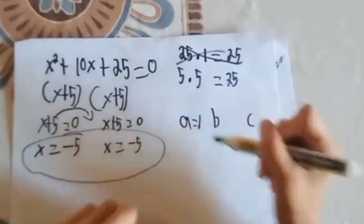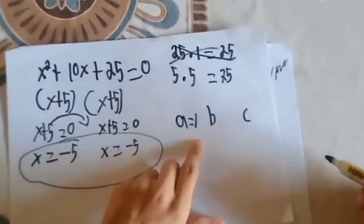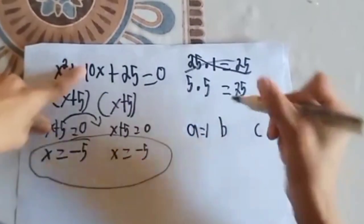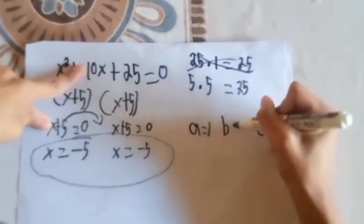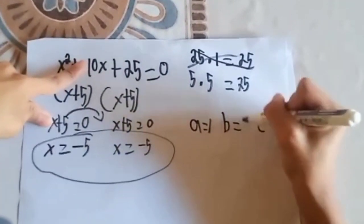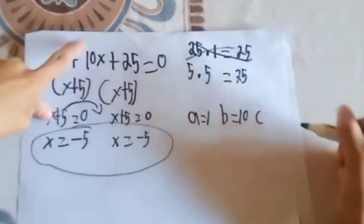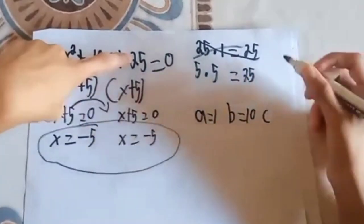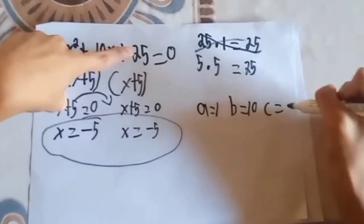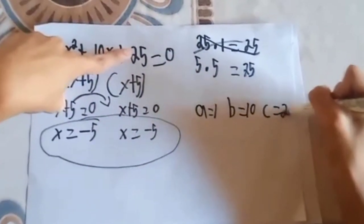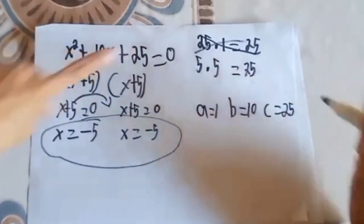Yung A po ay equals to 1, at yung B po ay equals to 10 kasi po ang pangalawang number ay yung 10, at yung C po ay equals to 25 kasi po siya yung pangatlong number, at yung P lang ang huli.